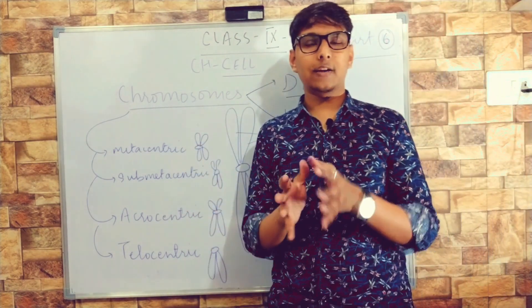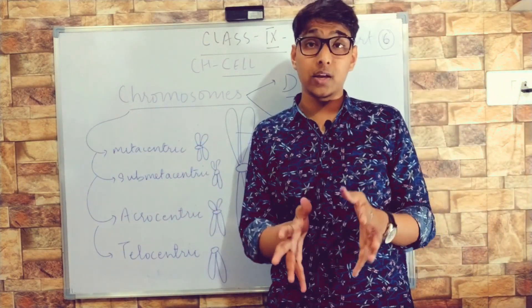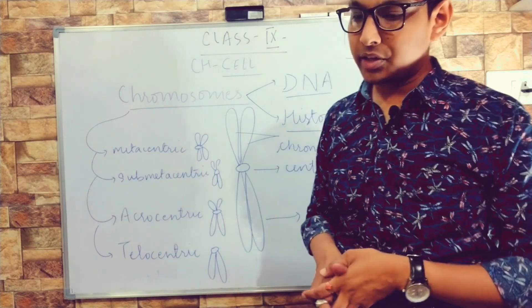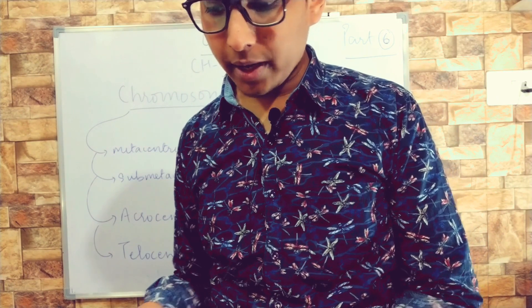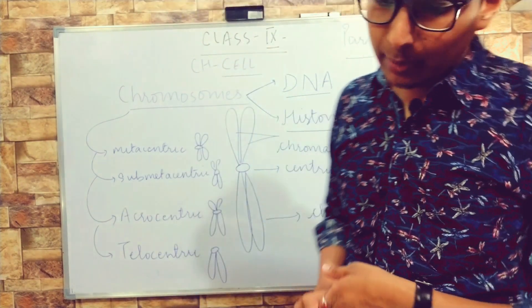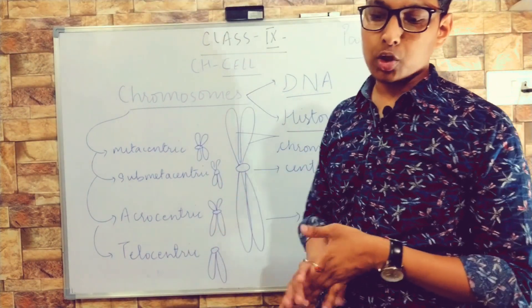I think you must have understood what chromosomes are: thread-like structures present inside the nucleus responsible for carrying hereditary information. Nothing else is there in this topic. Now the question comes: what do you mean by diploid and haploid number of chromosomes?